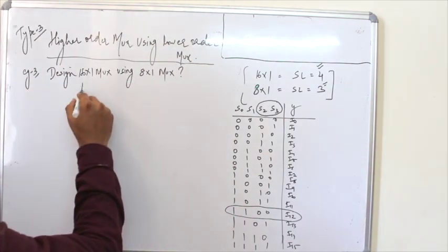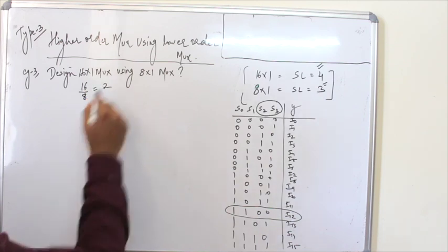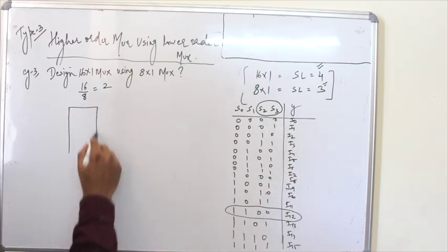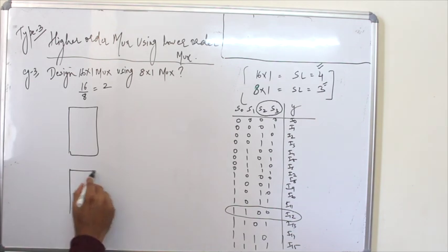So, 16 divided by 8 will give you 2. So, 2 boxes here, two 8-to-1 mux.